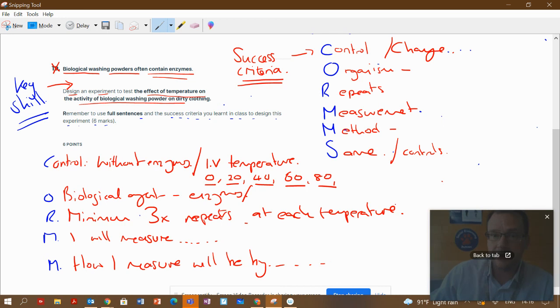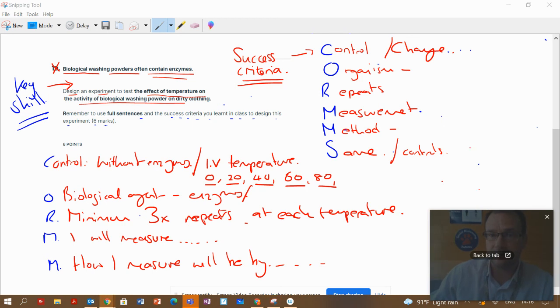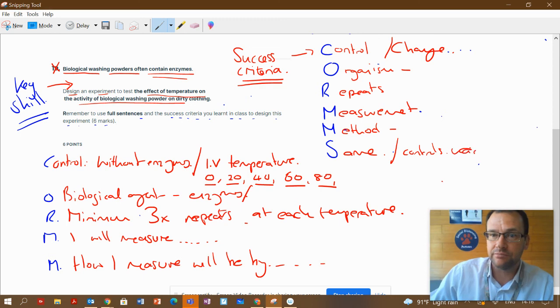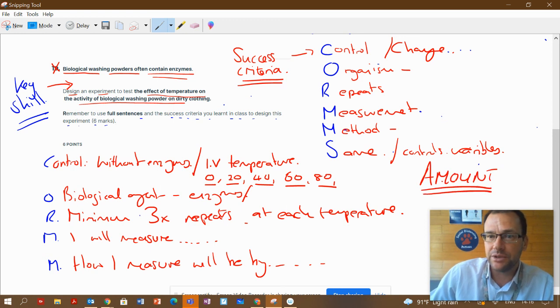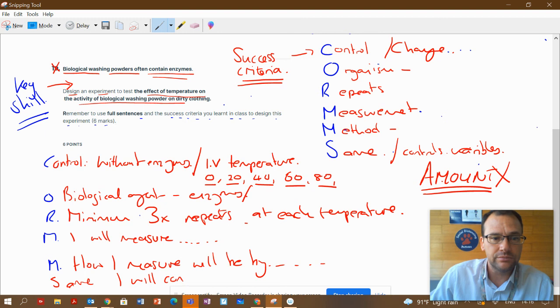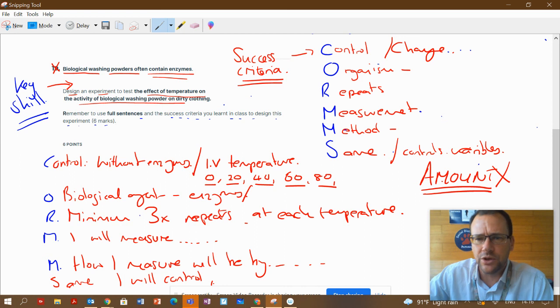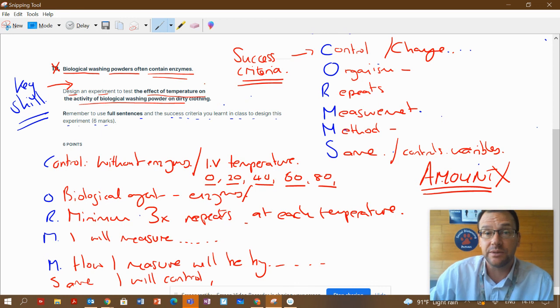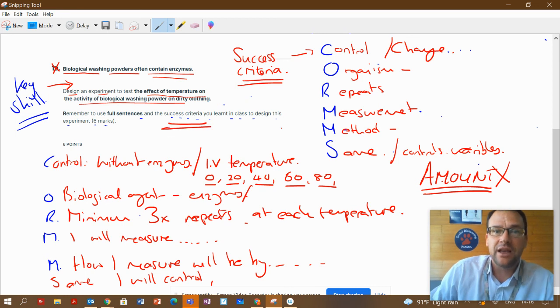The same, controls, control variables. Never ever say amount wrong, always say mass or volume. I will control the mass of the clothing, the mass of dirt on the clothing, the mass of biological washing powder, the volume of water in the washing machine, the time I allow the washing powder to do its job. All those things, all those are control variables.